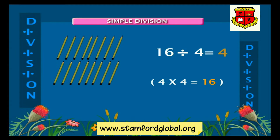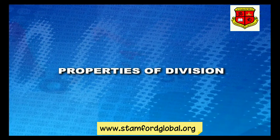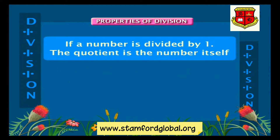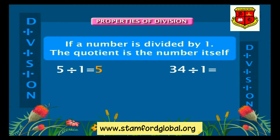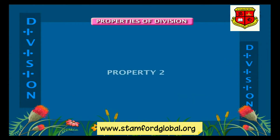Each child gets four pencils each. Properties of division. Property one: division of a number by one. If a number is divided by one, the quotient is the number itself. For example, five divided by one is equal to five, thirty-four divided by one is equal to thirty-four, three divided by one is equal to three, seven divided by one is equal to seven, and so on.